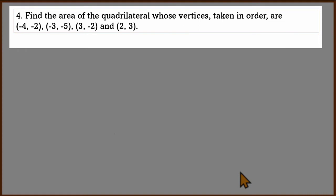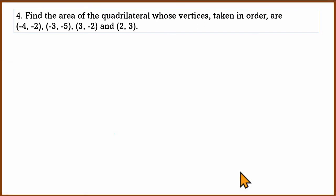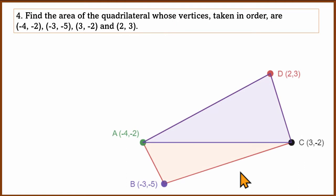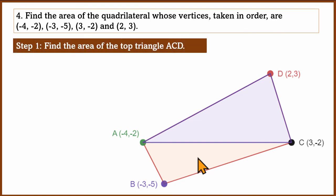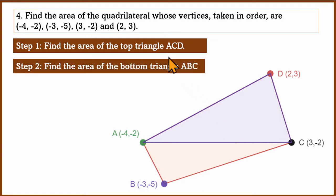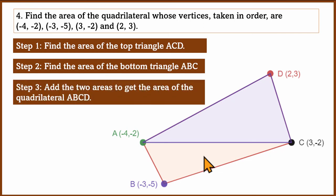This is the third question. Here is another interesting question: find the area of the quadrilateral with given vertices. Looking at the graph sheet, we can divide the quadrilateral into two triangles. We find the area of the top triangle and the area of the bottom triangle (ABC), then add the two areas to get the total area of the quadrilateral.